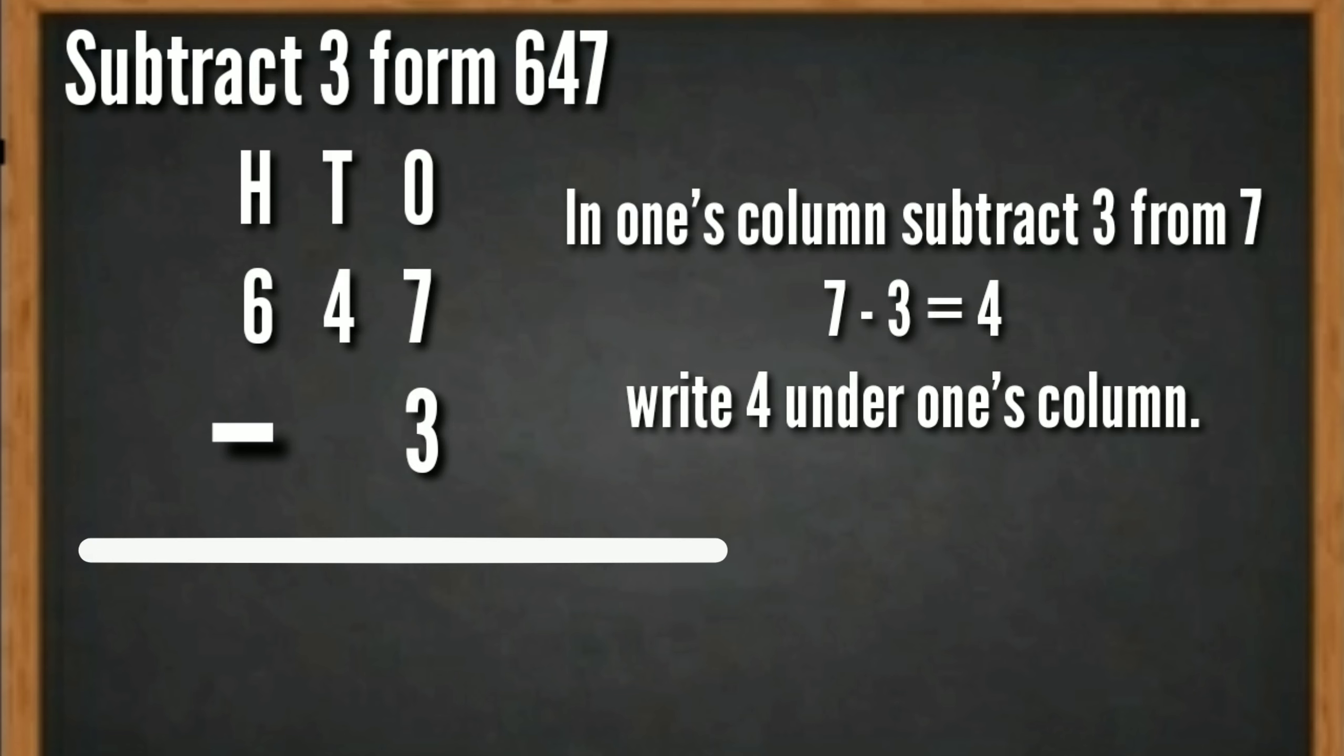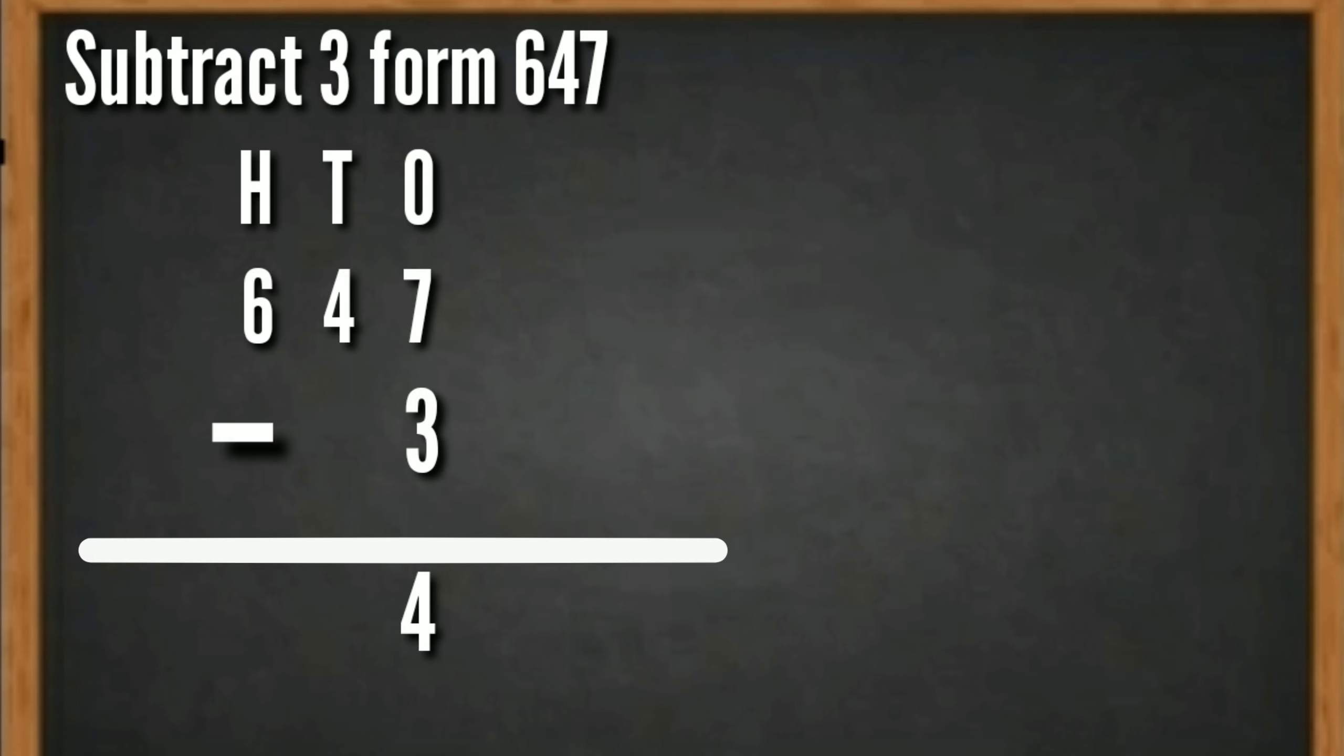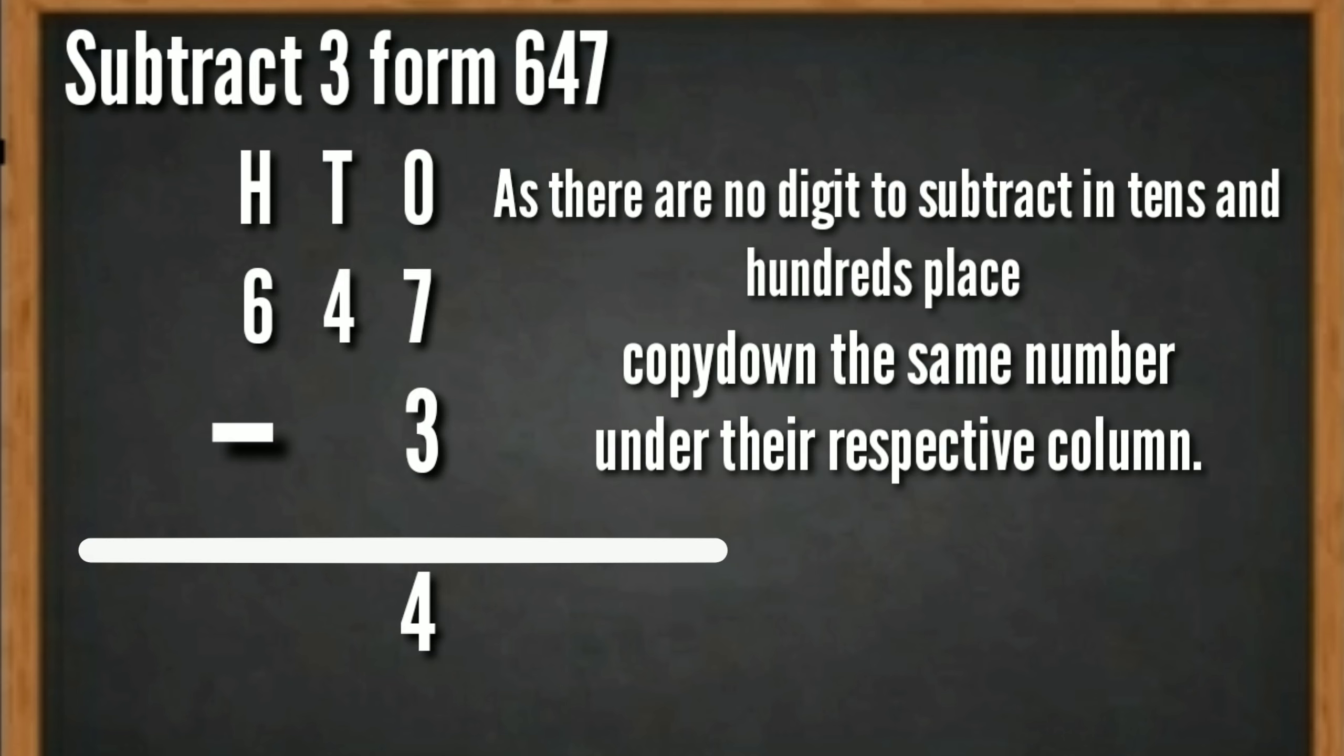In one's column, subtract 3 from 7. 7 minus 3 is equal to 4. Write 4 under one's column. As there are no digits to subtract in ten's and hundred's place, copy down the same number under their respective column. So the answer will be 644.